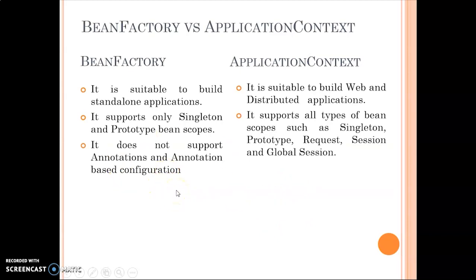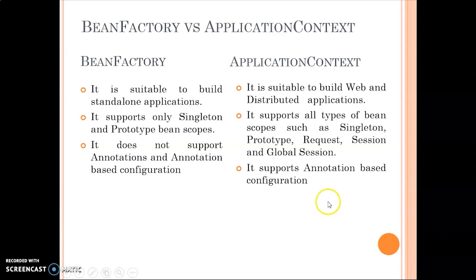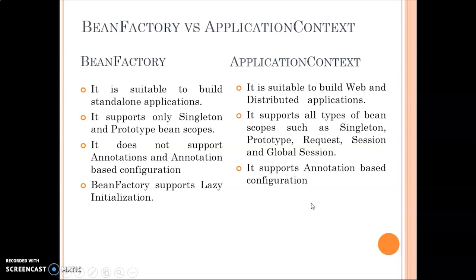Another key difference: BeanFactory does not support annotation-based configuration. If you want to configure a bean with BeanFactory, you must use XML-based configuration. ApplicationContext, on the other hand, supports annotation-based configuration — you can use annotations like @Autowire to configure your beans.